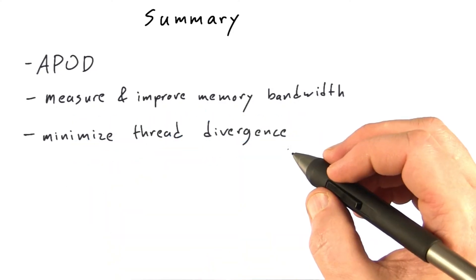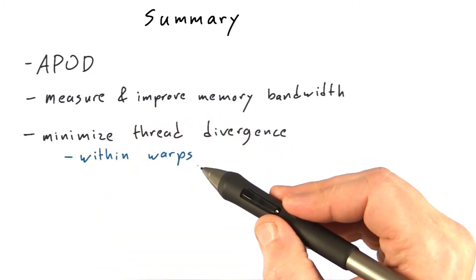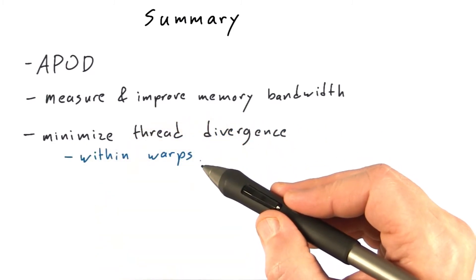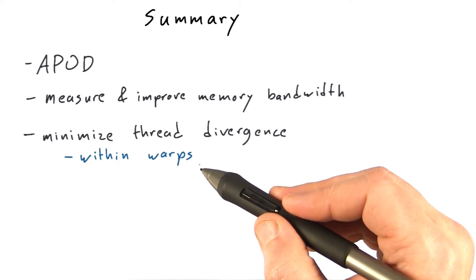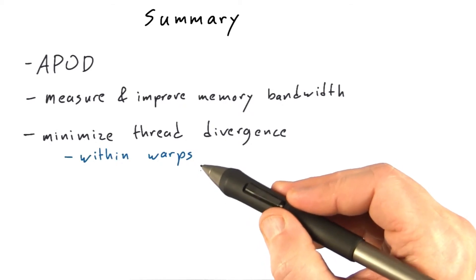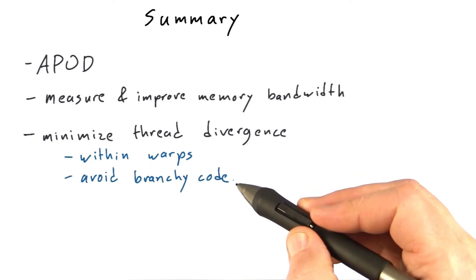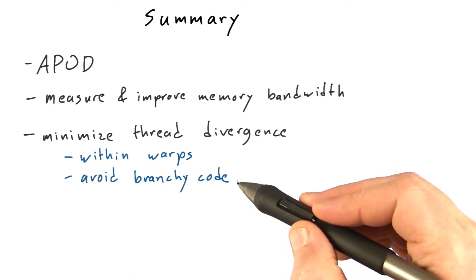We've talked about minimizing the branch divergence experienced by threads. Remember that this really applies to threads that diverge within a warp. If the warps themselves diverge, in other words, if all the threads within a warp take the same branch, go in the same code path, then that comes for free. There's no additional penalty for threads in different warps diverging. It's only when threads within a warp diverge that you have to execute both sides of the branch. As a rule, you should generally try to avoid branchy code. Code with lots of if statements, switch statements, and so on.